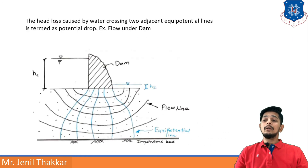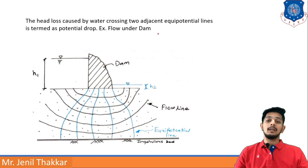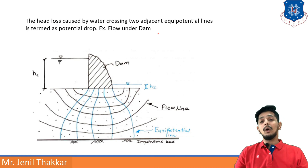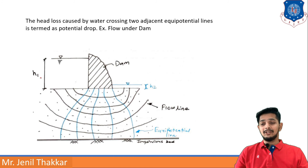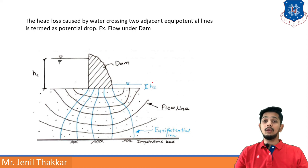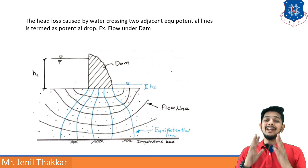The head loss caused by water crossing two adjacent equipotential lines is termed the potential drop. For example, consider flow under a dam: you can see the upstream water level H1 and downstream level H2. The flow net of the dam shows flow lines going through the soil and equipotential lines crossing them. This type of flow net is very useful in dam analysis.